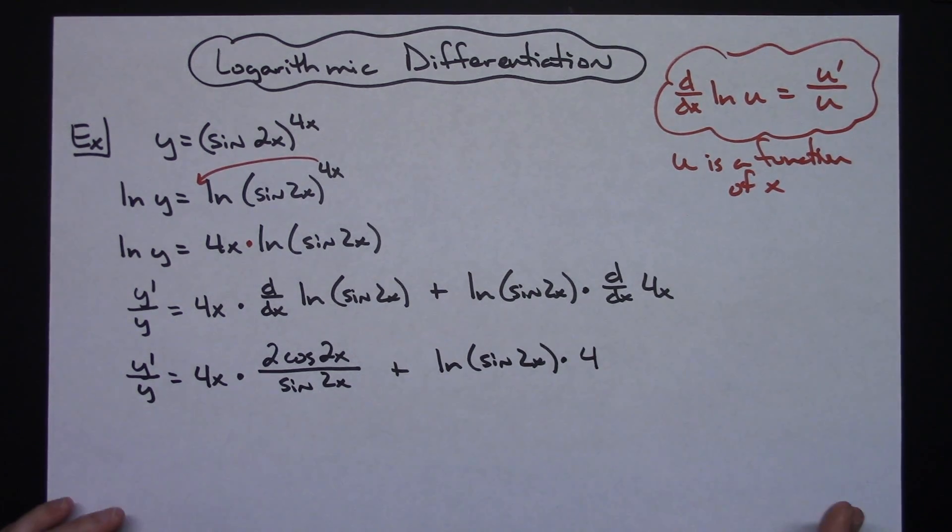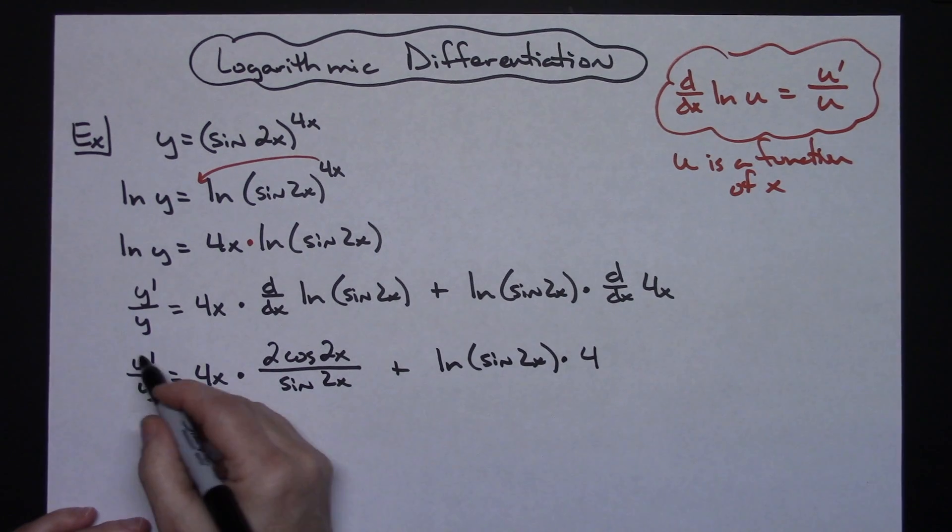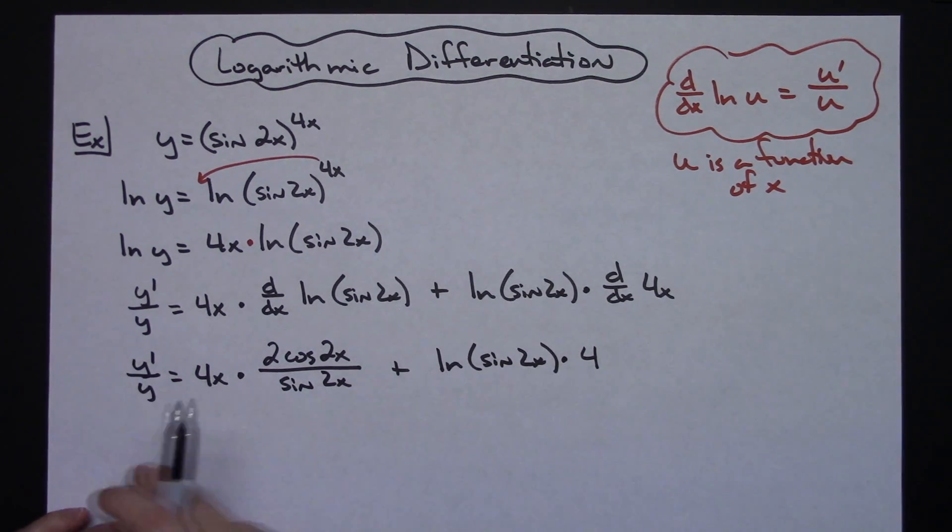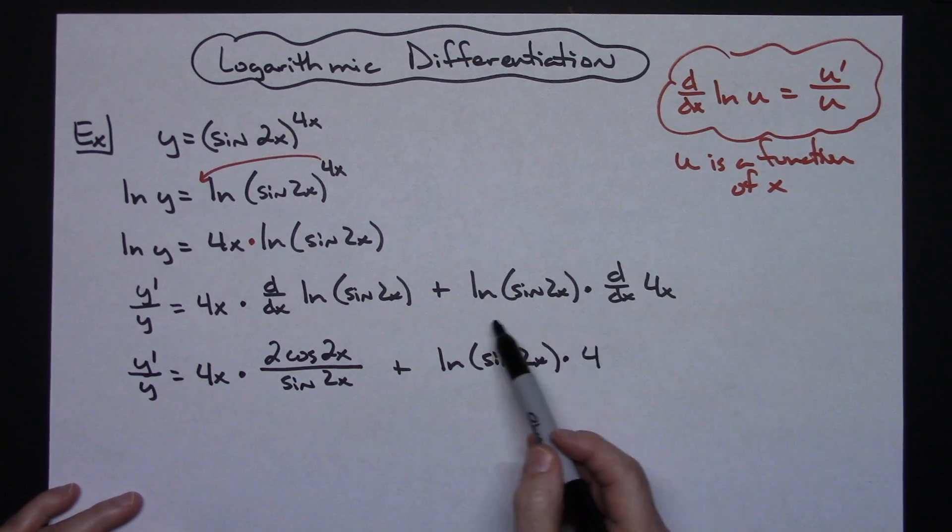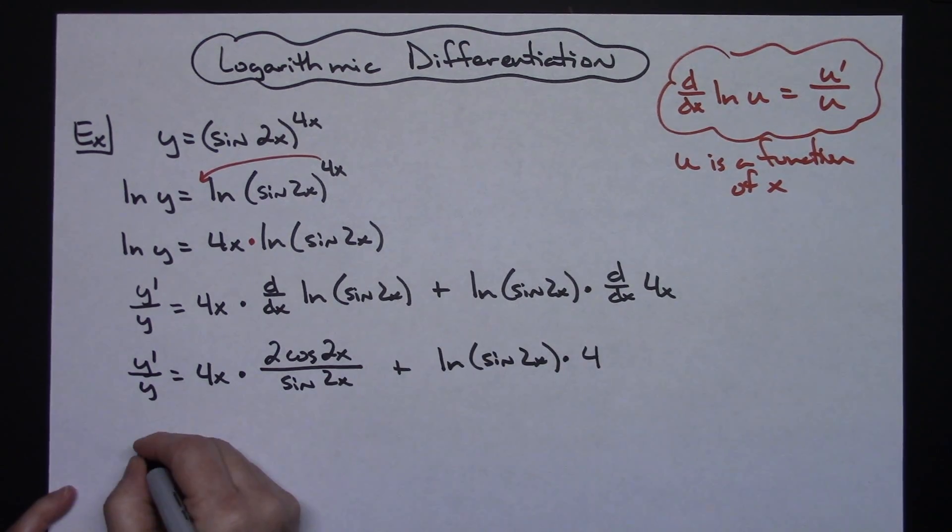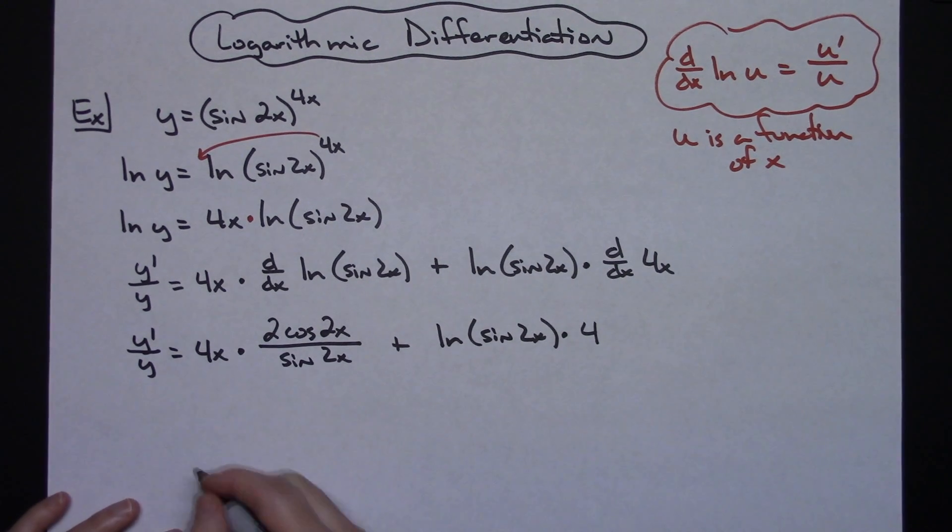Now next thing we need to do is ultimately solve for this y prime. So I need to multiply both sides by the y. When I do that, I will probably clean this up a little bit. I can take 4 times 2 there and get an 8x in the numerator here. I can pull the 4 out in front of this one.